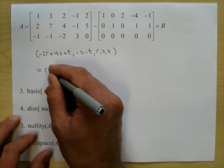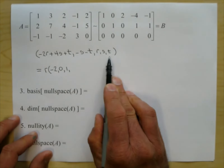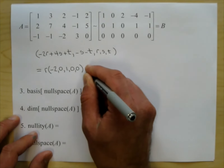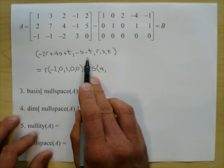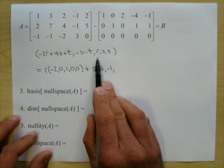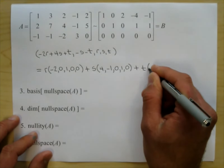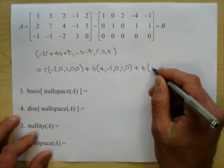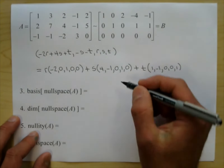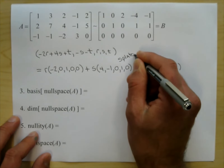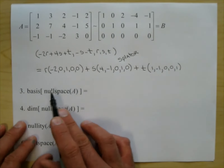When I splactor, I factor out r times the vector negative 2, 0, 1, 0, 0, plus s times 4, negative 1, 0, 1, 0, plus t times 1, negative 1, 0, 0, 1. This is a linear combination of three seeds — three vectors in R5.